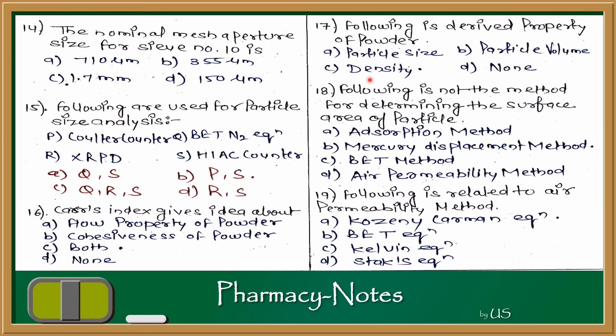Question 17: Which of the following is a derived property of powder? Derived properties are those obtained from fundamental properties such as particle size and particle volume. From these fundamentals we get flow property, density, and bulkiness. The answer is C — density.